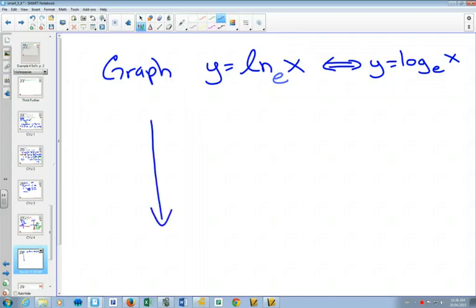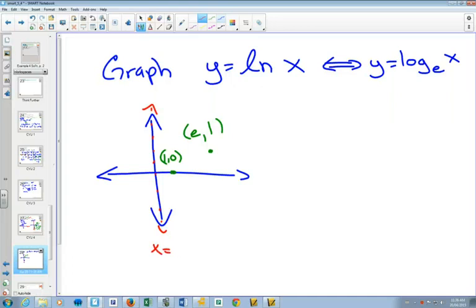So how do we graph the natural log? Well, it's going to have which point that every single log graph has? 1 comma 0. And then it's going to have another point here, something comma 1. But now that our base is e, you'd have e comma 1. And our asymptote would still be at x equals 0. And the shape would still be the same.